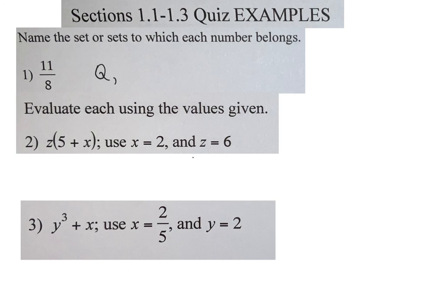If it is rational, that means it's also what? What's the other set? Real. So you would list rational and real. You want the lowest set it will belong to and everything after that.